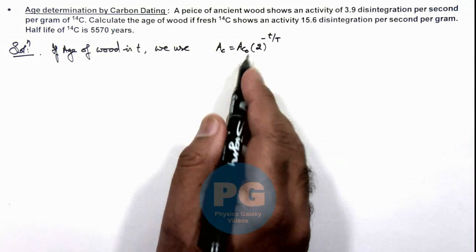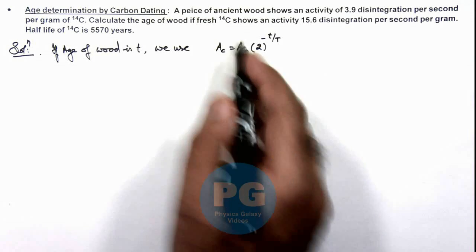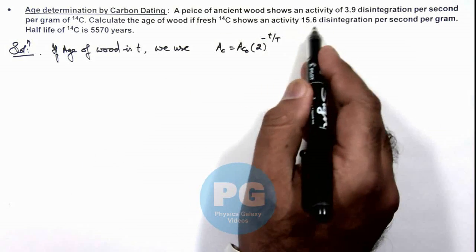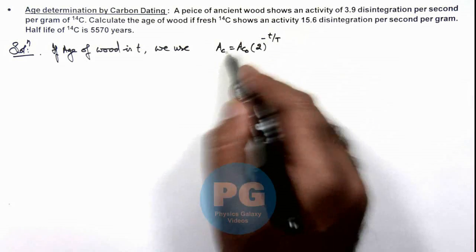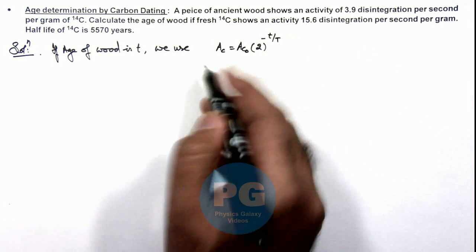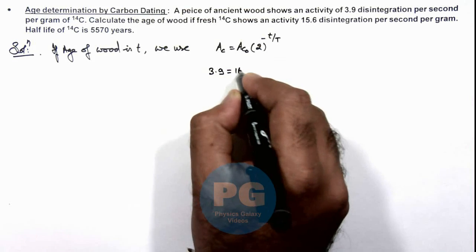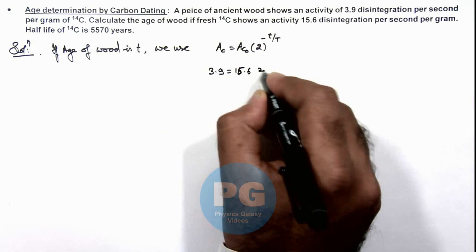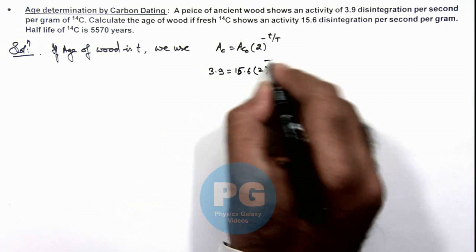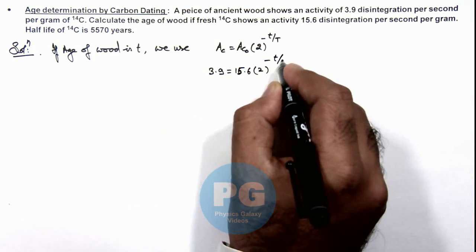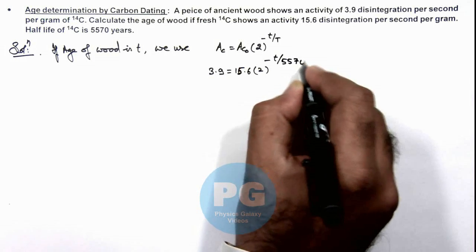Here we can write initial activity can be considered as the activity of fresh wood which is 15.6, and after time t it reduces to 3.9. So directly we can write 3.9 is equal to 15.6 multiplied by 2 to power minus t by 5570 years.